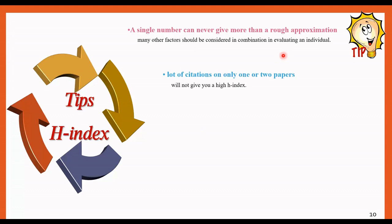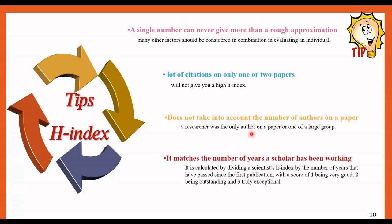The second one, getting a lot of citations on only one or two papers will not give you a high H-index. If your only one paper has a lot of citations, this will be shown in a low H-index. The third item that you should consider, it doesn't tell you whether a researcher was the only author on a paper or won a large group. You can't receive it from H-index only.